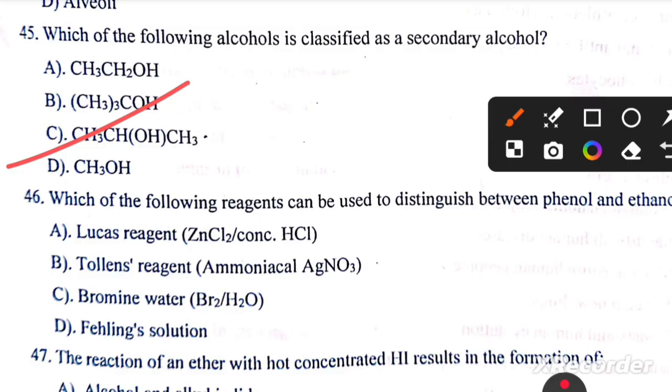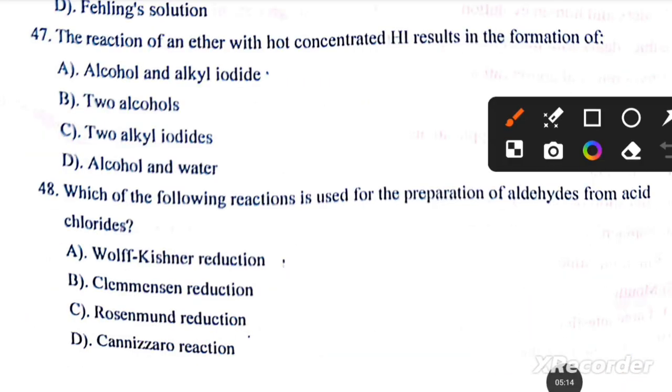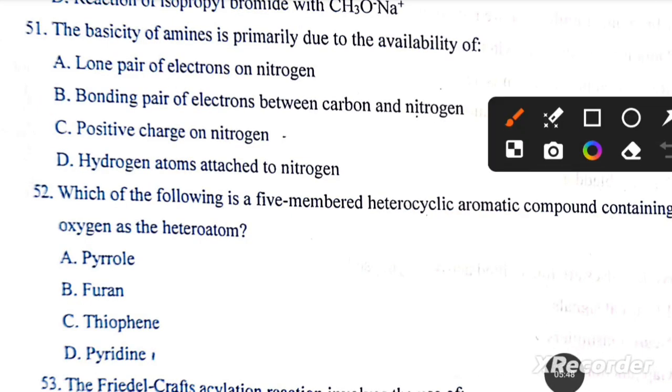Question number 43: which of the following reagents can be used to distinguish between phenol and ethanol? Bromine water. The reaction of an ether with hot concentrated HI results in the formation of alcohol and alkyl iodide. Which of the following reaction is used for the preparation of aldehydes from acid chlorides? Next question, question number 49: according to Huckel's rule, a compound is considered aromatic if it has 4n plus 2 pi electrons.